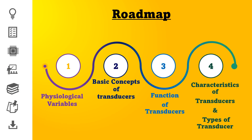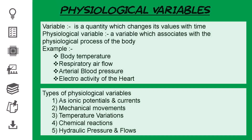Let's get started. The major function of medical instrumentation is the measurement of physiological variables. A variable is defined as a quantity whose values change with time. Therefore, a physiological variable is defined as a variable that is associated with the physiological process of the human body.